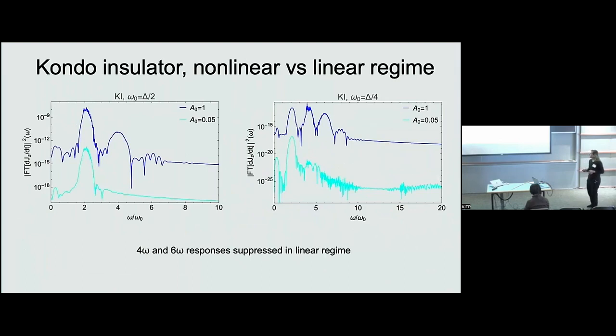Okay. So first for the Kondo insulator we can contrast the nonlinear or high field response versus the linear the more linear response which is at a lower incident intensity. And of course by symmetry we have a two omega response. So this is the dipole acceleration term to describe the high harmonic generated intensity versus multiples of the incident frequency. And so this is for delta over two and delta over four. That's why this goes to ten omega naught. This goes to twenty to describe the same energy window.